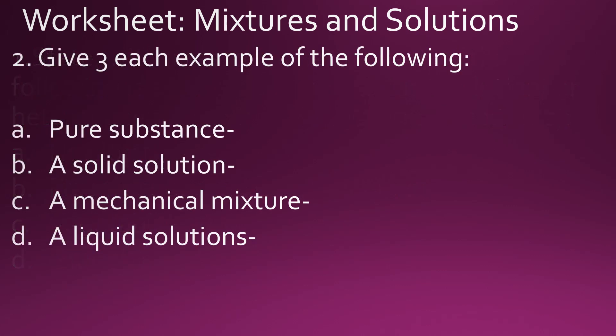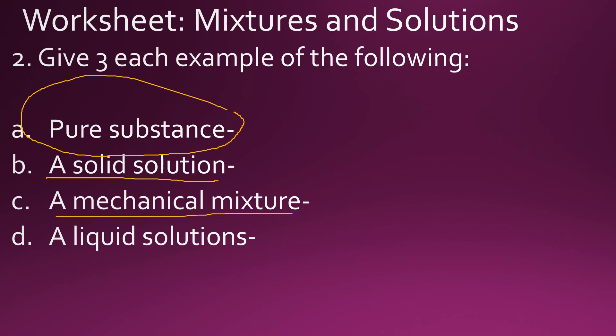Okay, number two: give three examples each of the following — tatlong example of the following. Letter A: pure substance — dapat may tatlong example. Letter B: a solid solution — magbigay kayo ng tatlong solid solution. Letter C: mechanical mixture. And letter D: a liquid solution. So you need tatlong pure substance, tatlong solid solution, tatlong mechanical mixture, at tatlong liquid solution na example.